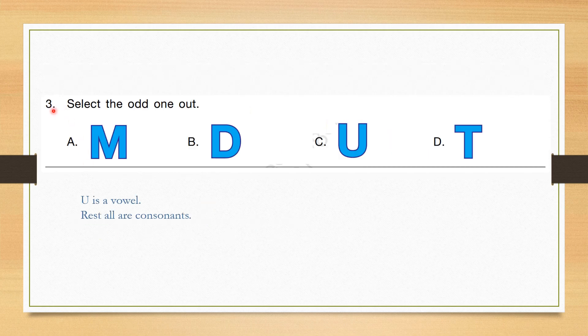Question number 3: Select the odd one out. The options are M, D, U and T. U is the only vowel; the rest are consonants. So the correct answer is option C.